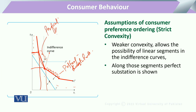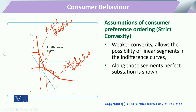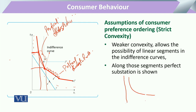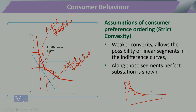Otherwise jo hamare paas strict convex ka curve hoga, woh jab is form mein hoga toh woh perfect substitute ki bajae limited substitutability hamein show karta hai, jismein bohut chote chote points ke upar bhi jitni possibilities hain woh tamam ki tamam show ho rahi hoti hain.